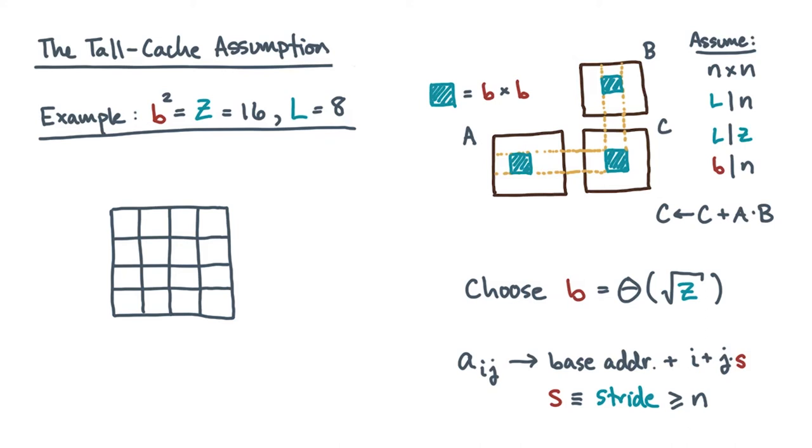In this case, the tall cache assumption does not hold. Columns no longer fill full lines. Thus, the four by four block doesn't actually fit in cache, even though the cache has enough capacity.